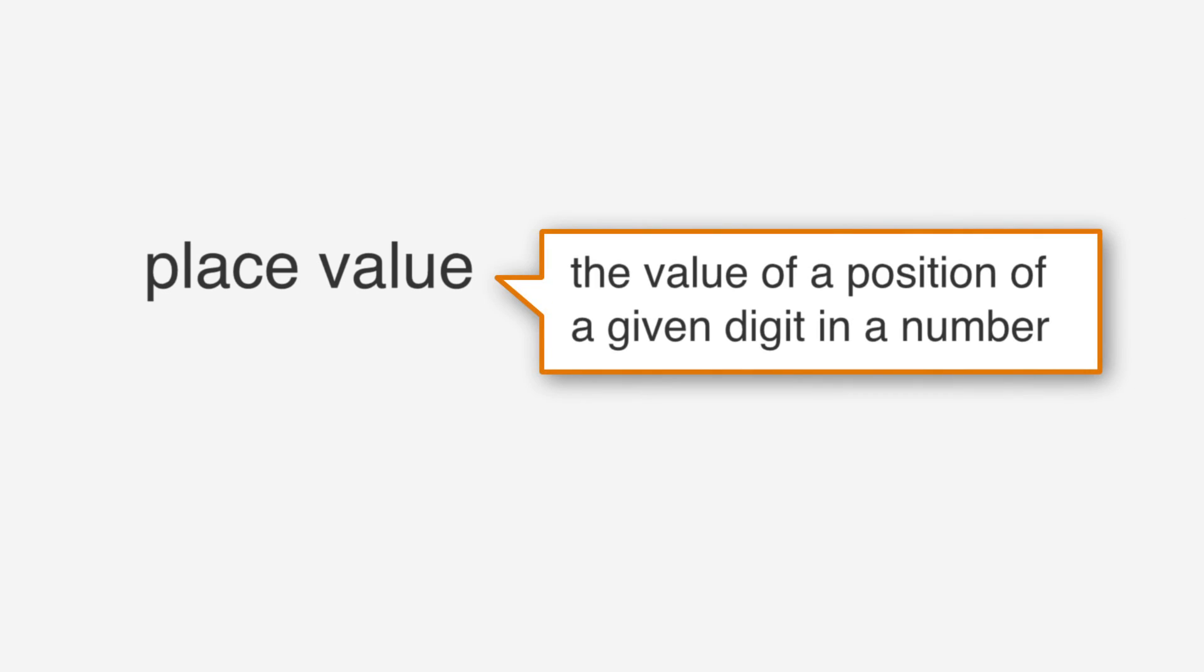One last idea we need to brush up on is place value. Place value is the value of a position of a given digit in a number. Remember that each position is worth 10 times the position to its right. Let's define the values of positions with an example. We'll look at the numbers 6723 and 149 thousandths. Written out, it looks like this: 6723.149. 9 is in the thousandths place, 4 is in the hundredths place, 1 is in the tenths place.